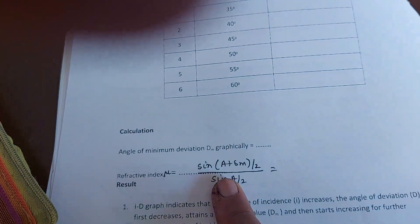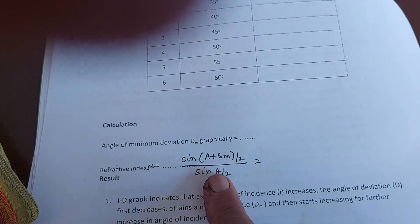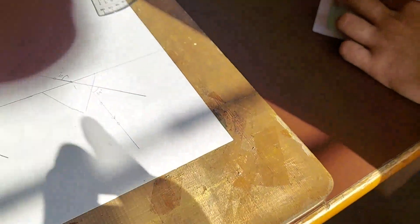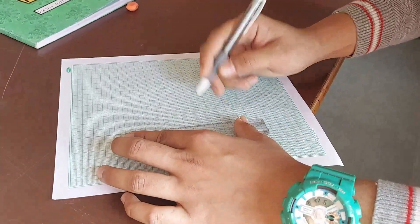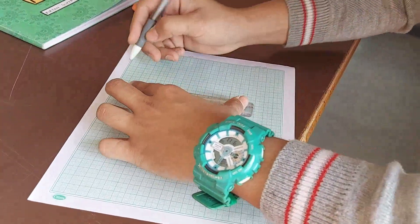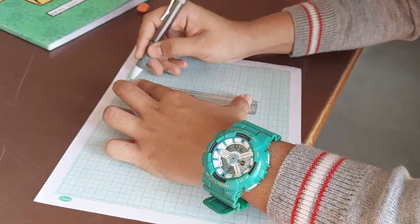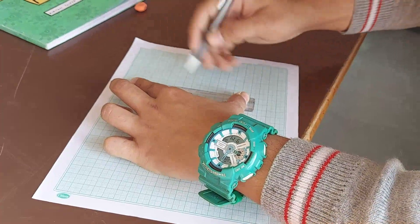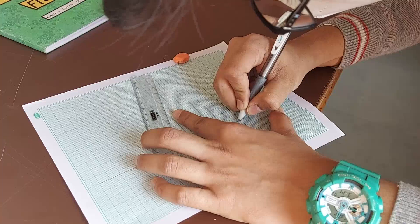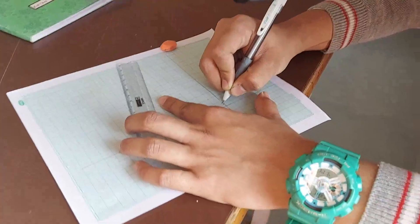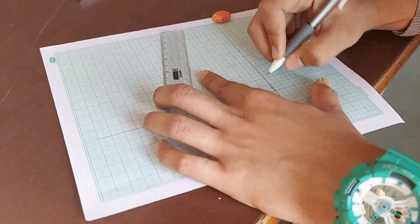In this case, since we are taking an equilateral prism, the angle A will be 60. So we will now plot the graph.